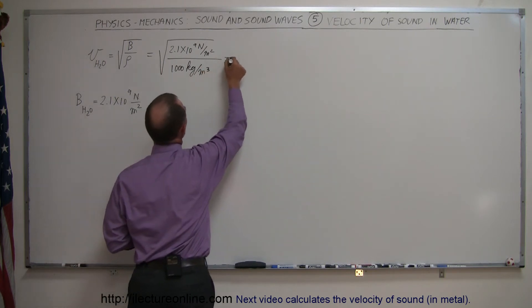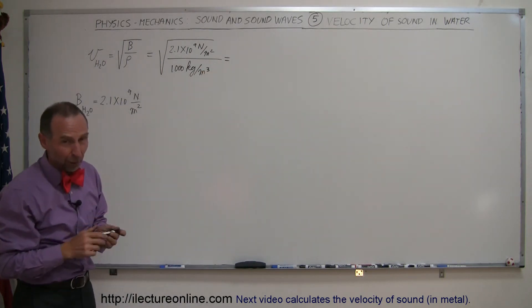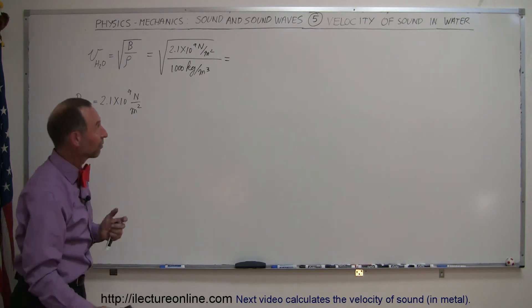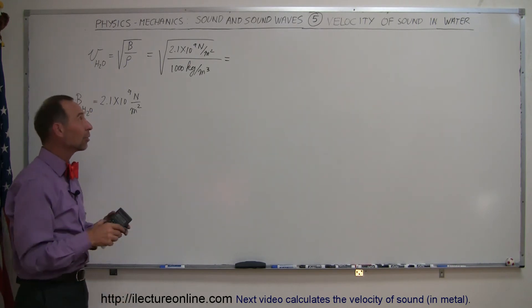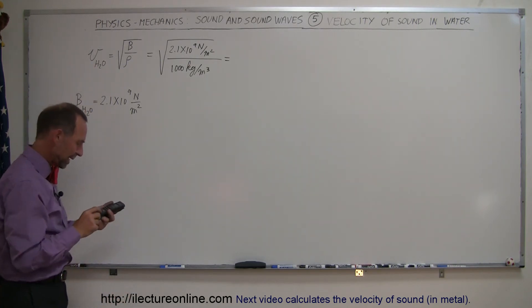There we go, cubic meter, and let's see what that is equal to. Now remember, for air at STP conditions it was 331 meters per second. Let's see what we get over here.